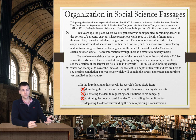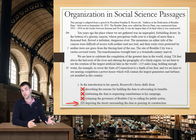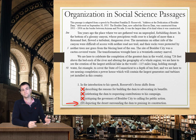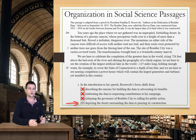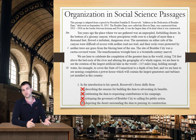That leaves us with D, which tells us that Roosevelt's focus is shifting from depicting the desert surrounding the dam to praising its construction. That sounds pretty close to what I said — describing the location of the dam in the first paragraph, and then celebrating the structure itself in the second paragraph. So I really like answer choice D. Of course, A, B, and C are all very clearly wrong, which makes me very confident selecting D as the correct answer.